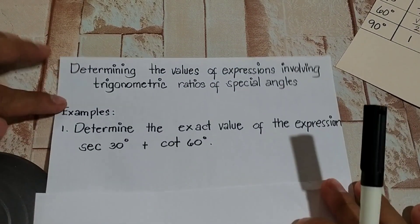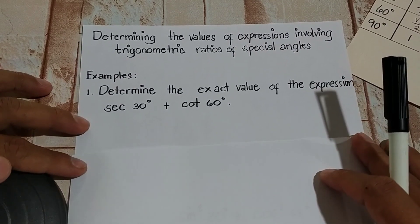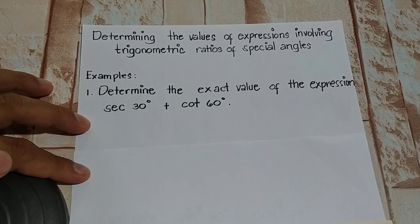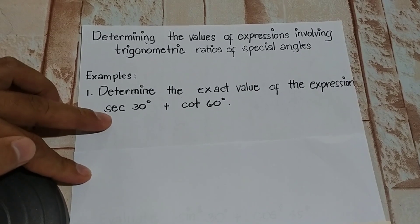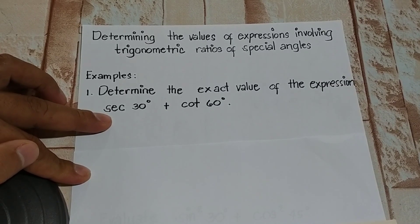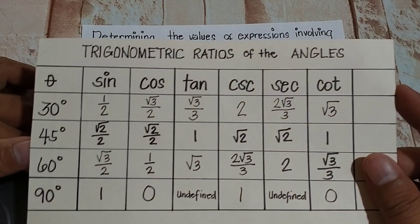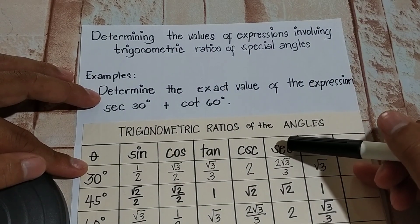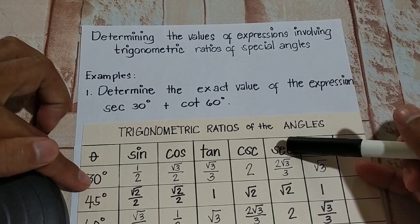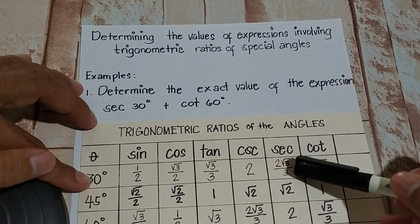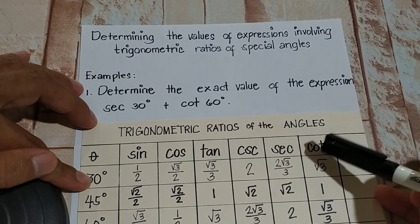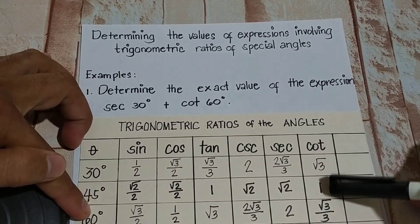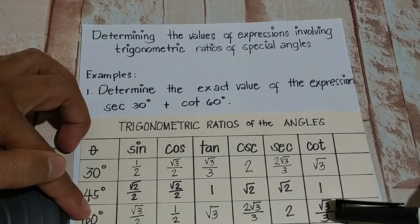Let's start with number one. Determine the exact value of the expression: secant 30 degrees plus cotangent 60 degrees. To identify the value of secant 30 degrees, we'll just go to our table of values. So secant 30 degrees — looking at the function and the 30-degree column — that is 2 square root of 3 over 3. And cotangent 60 is square root of 3 over 3.